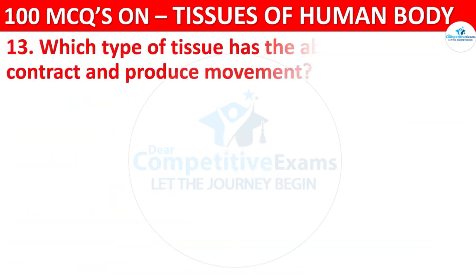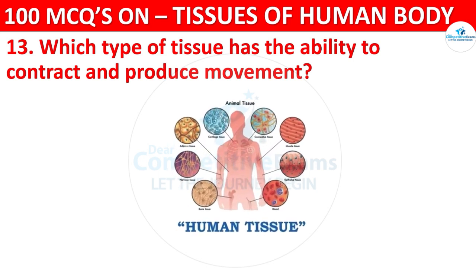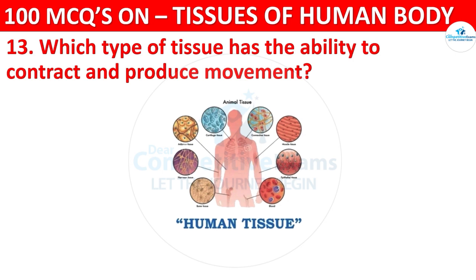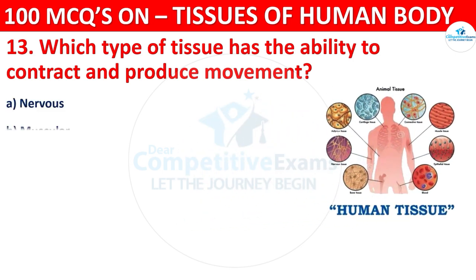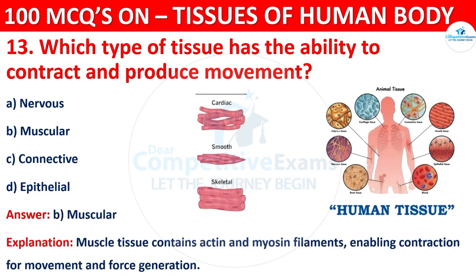Question number thirteen: which type of tissue has the ability to contract and produce movements? Options are nervous, muscular, connective, or epithelial. The correct answer is B, that is muscular. Muscle tissue contains actin and myosin filaments, enabling contraction for movement and force generation.